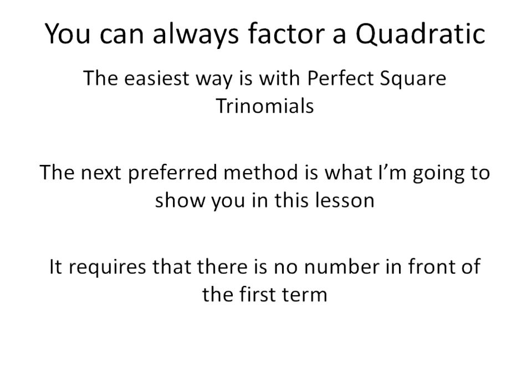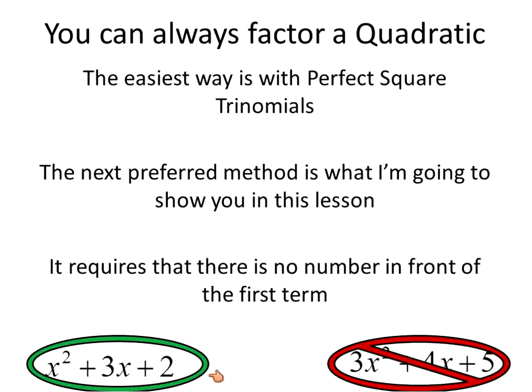It requires that there's no number in front of the first term, so no coefficient of x. Oftentimes we call the coefficients in these three terms a, b, and c. Sometimes you'll say that the coefficient of x squared, which is a, is a given number. In other words, for us to be able to do it properly, it requires that a equals one because the coefficient of x squared would be one. With any other number this is not going to work. So there's what we're going to be working with today.